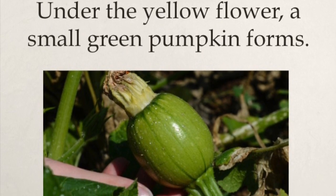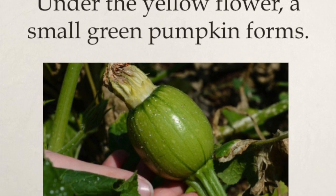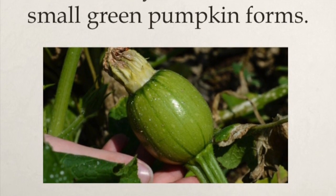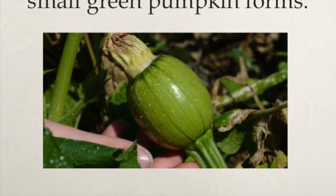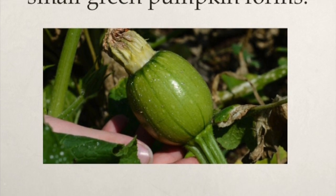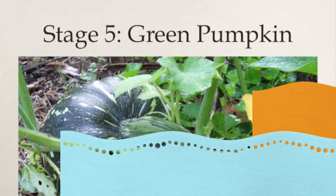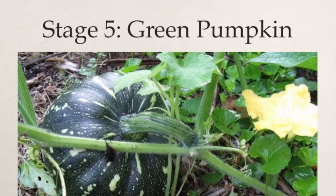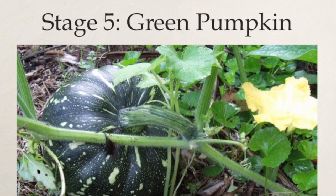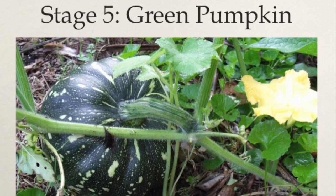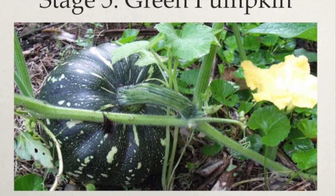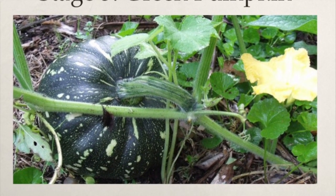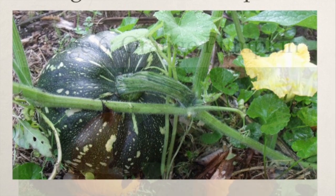A small green pumpkin starts to form. It starts off small and then becomes a greener, bigger pumpkin. It really starts to get some size.